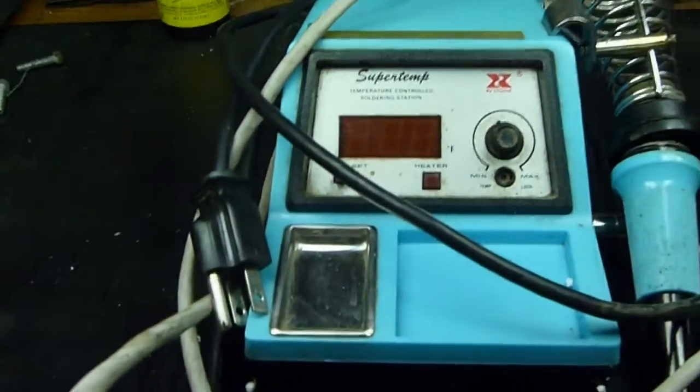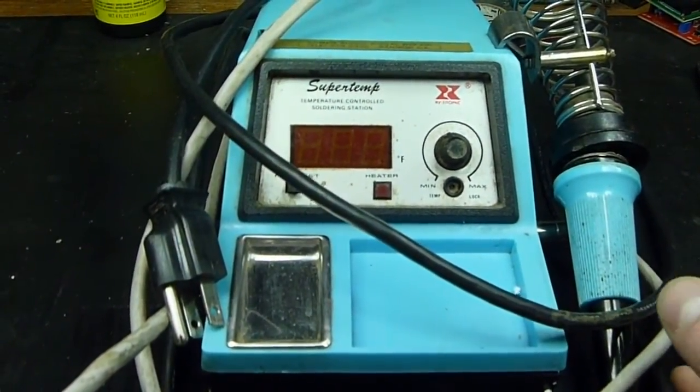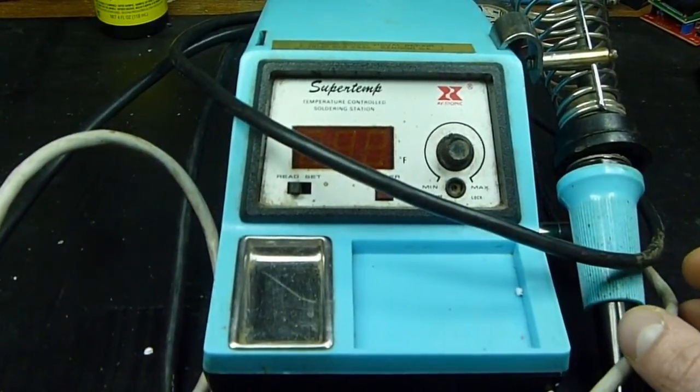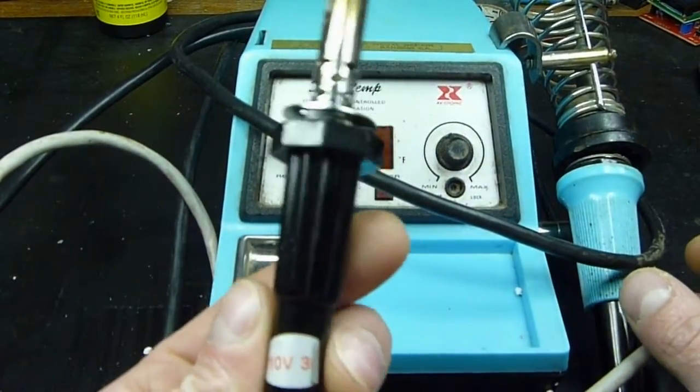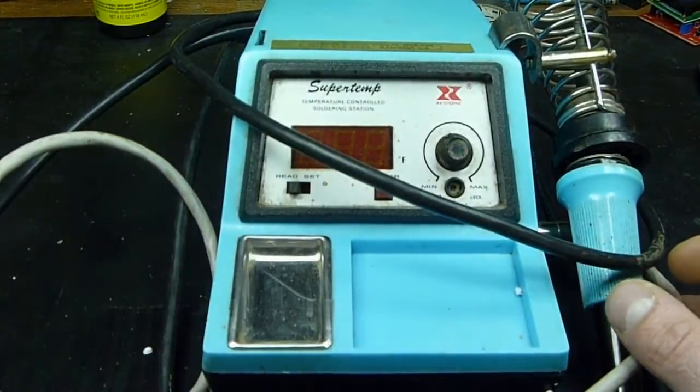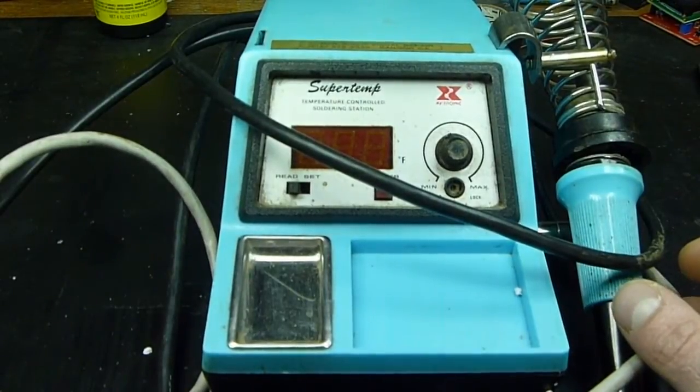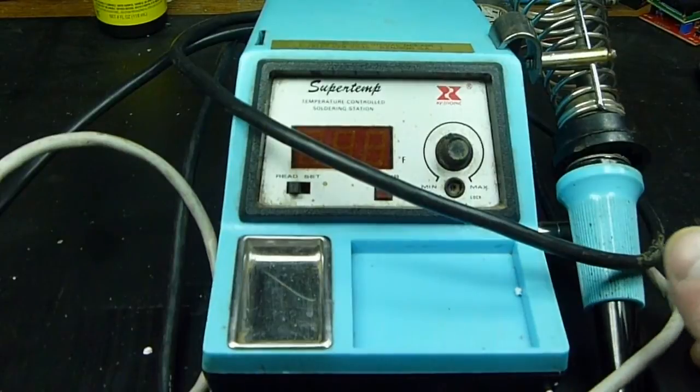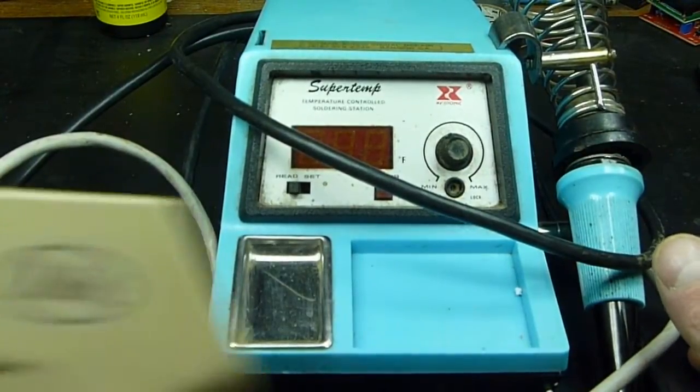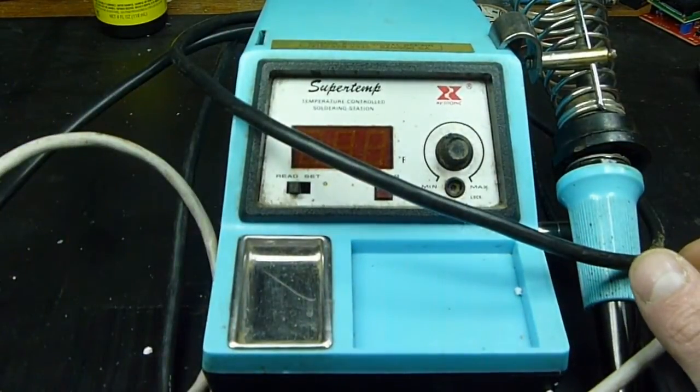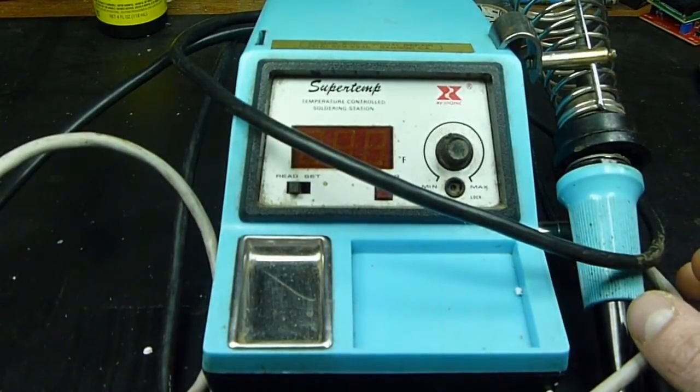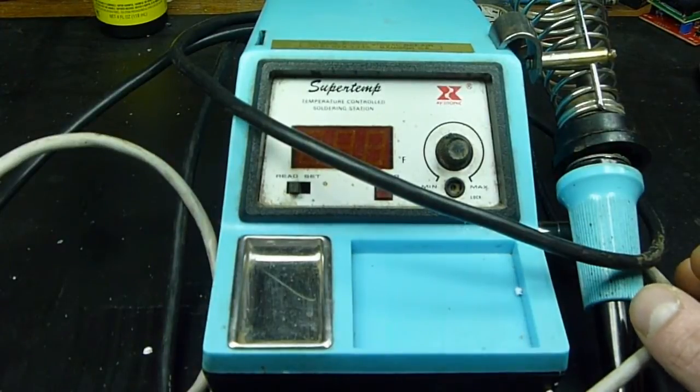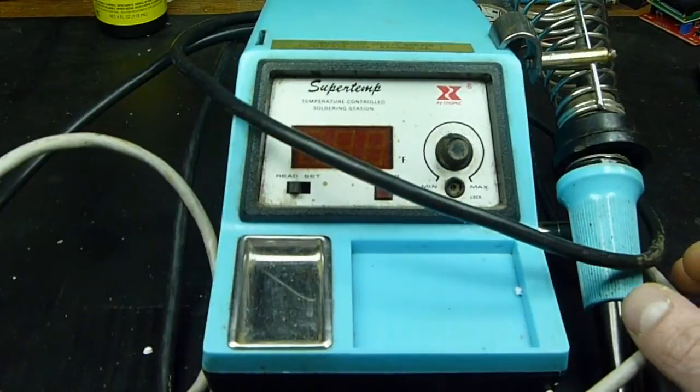This is actually the first temperature controlled soldering station that I've owned or used. If any of you have seen my previous videos, this is my current primary soldering iron, along with a couple heavy duty Weller soldering guns and a Temp-Matic that I rebuilt in a previous video. Those have been sufficient for what I've done. Most of what I work on is vintage electronics where you practically need an acetylene torch to melt the solder it seems.